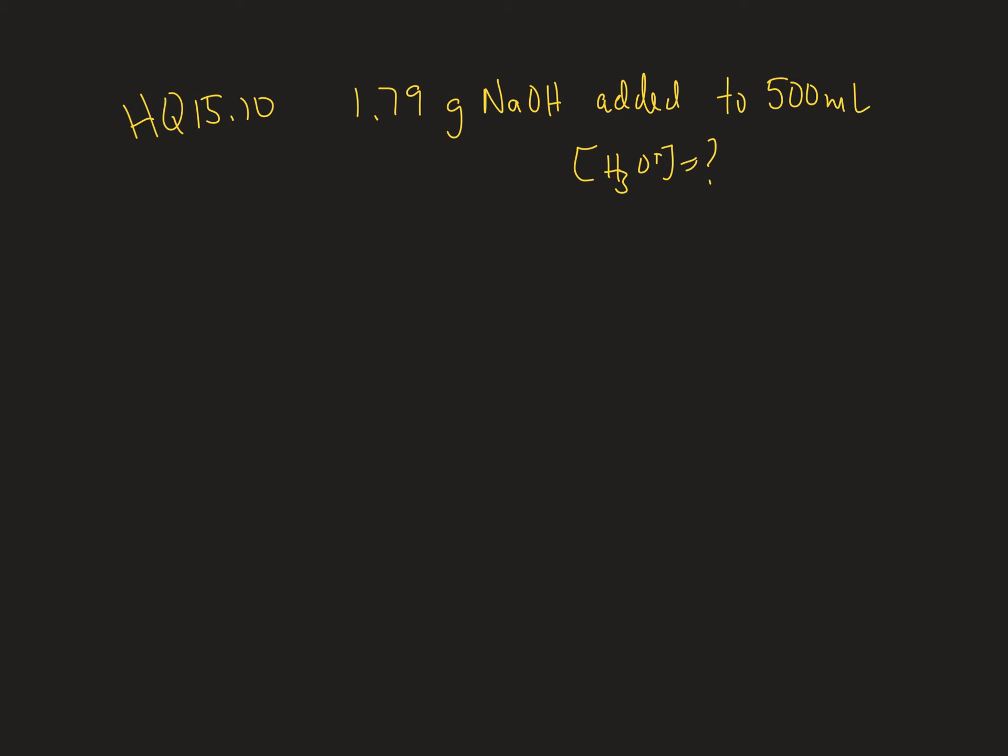I've got 1.79 grams of sodium hydroxide, and I know that sodium hydroxide is 40 grams for one mole, that's the molar mass. I have approximately 4.475 e to the negative 2 moles of sodium hydroxide.